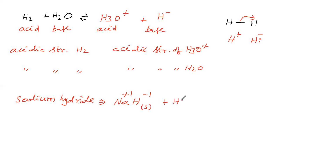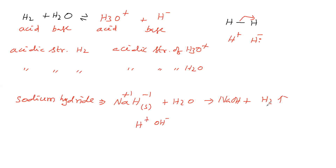This sodium hydride is added into water. Immediately hydrogen gas will be liberated and sodium hydroxide is produced. Water we can write as H⁺ + OH⁻. The H⁻ takes this H⁺ and becomes hydrogen gas. The sodium ion takes hydroxide and becomes sodium hydroxide. This reaction is a vigorous reaction.